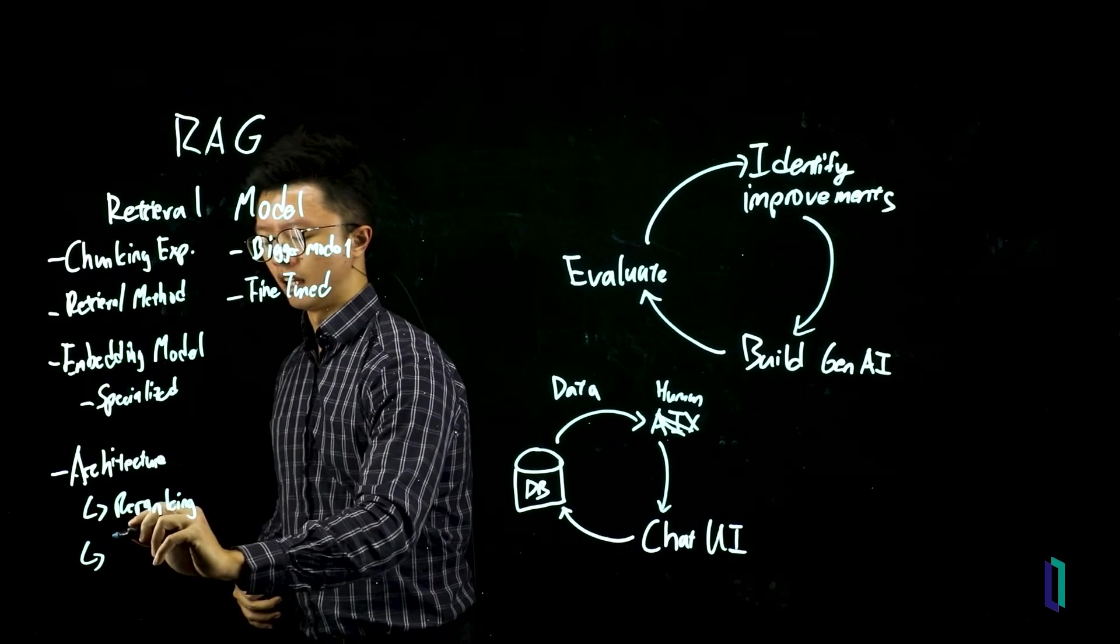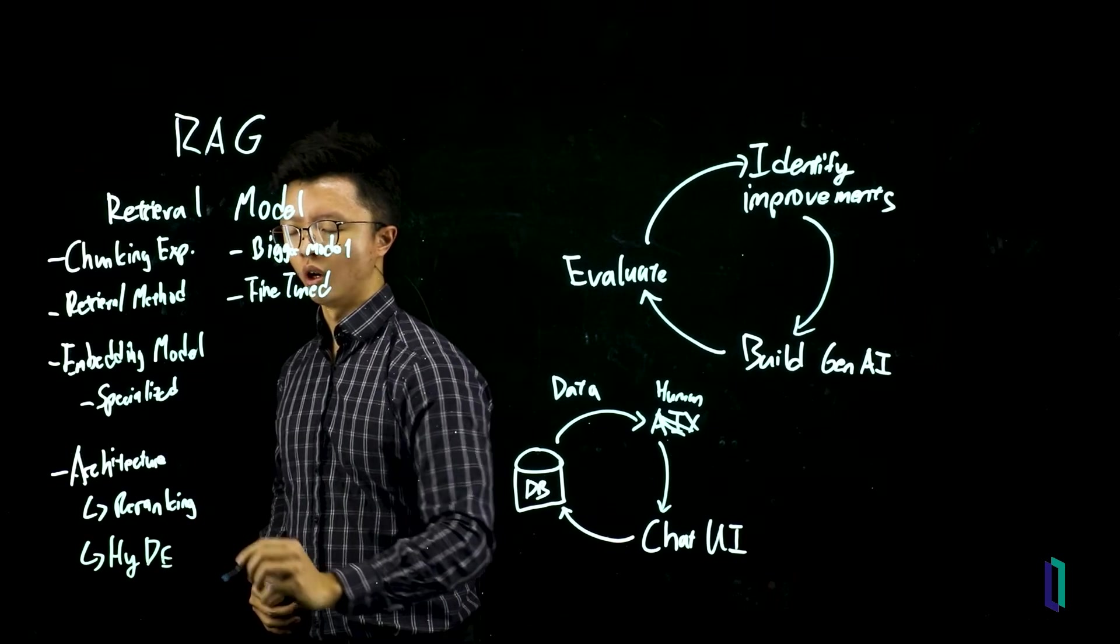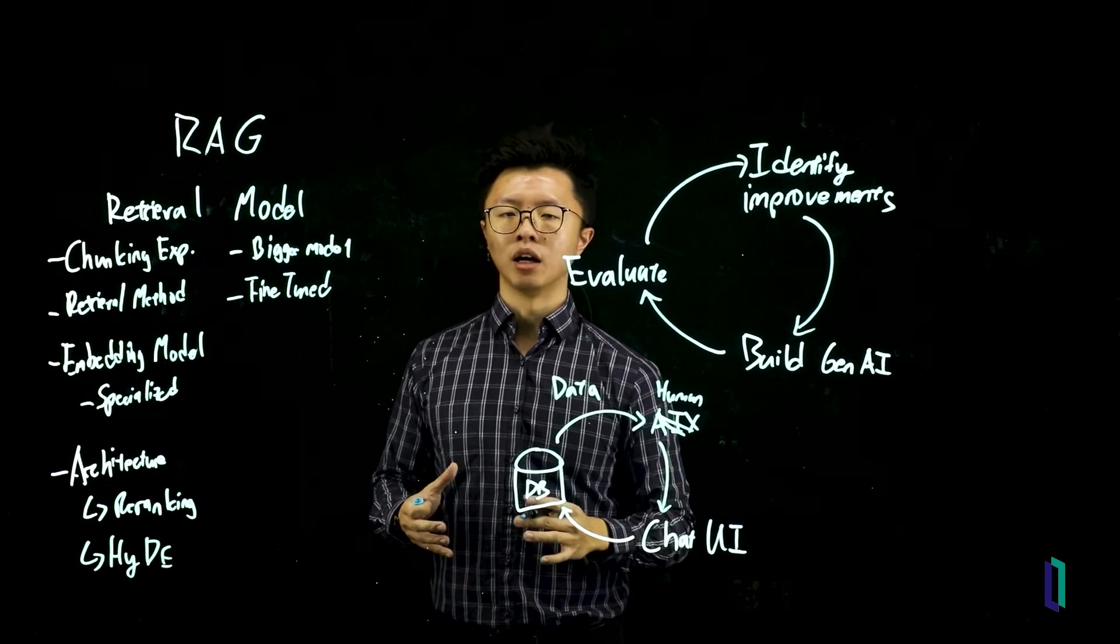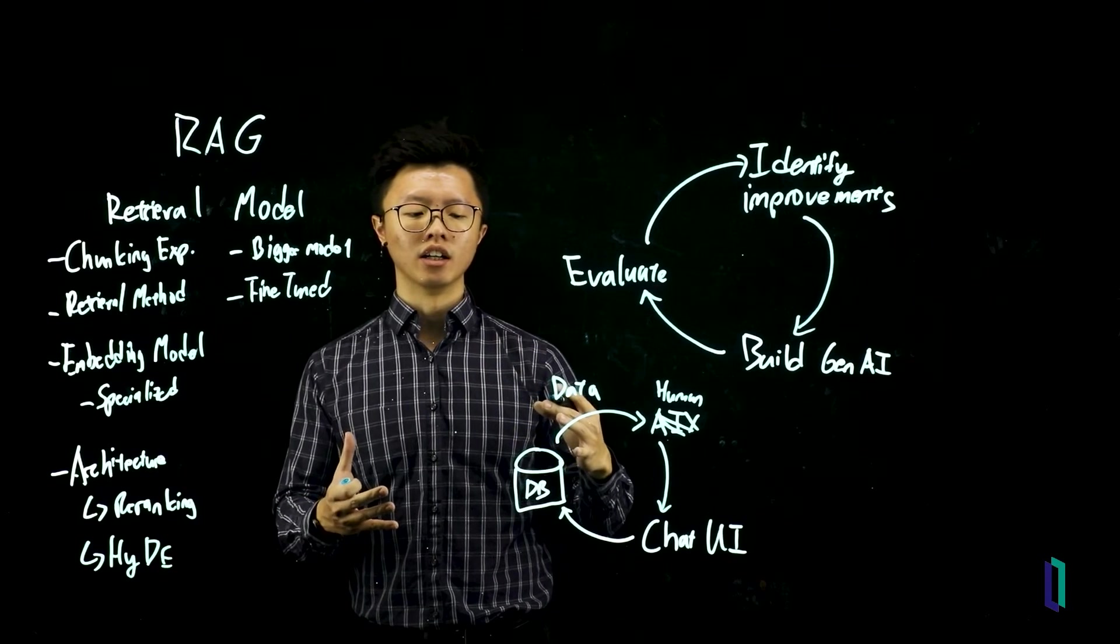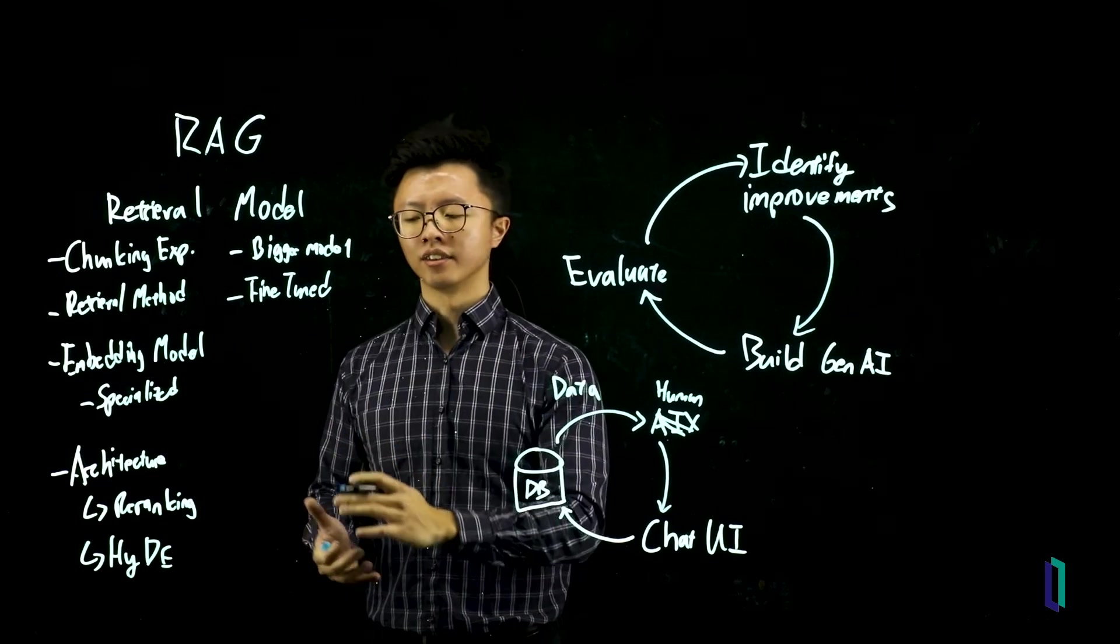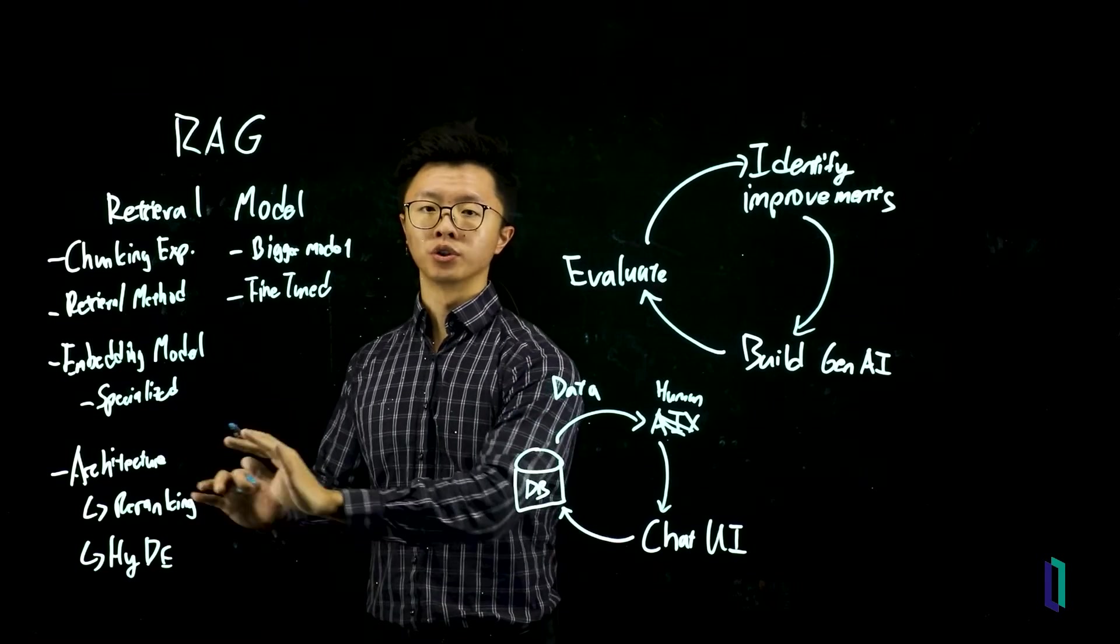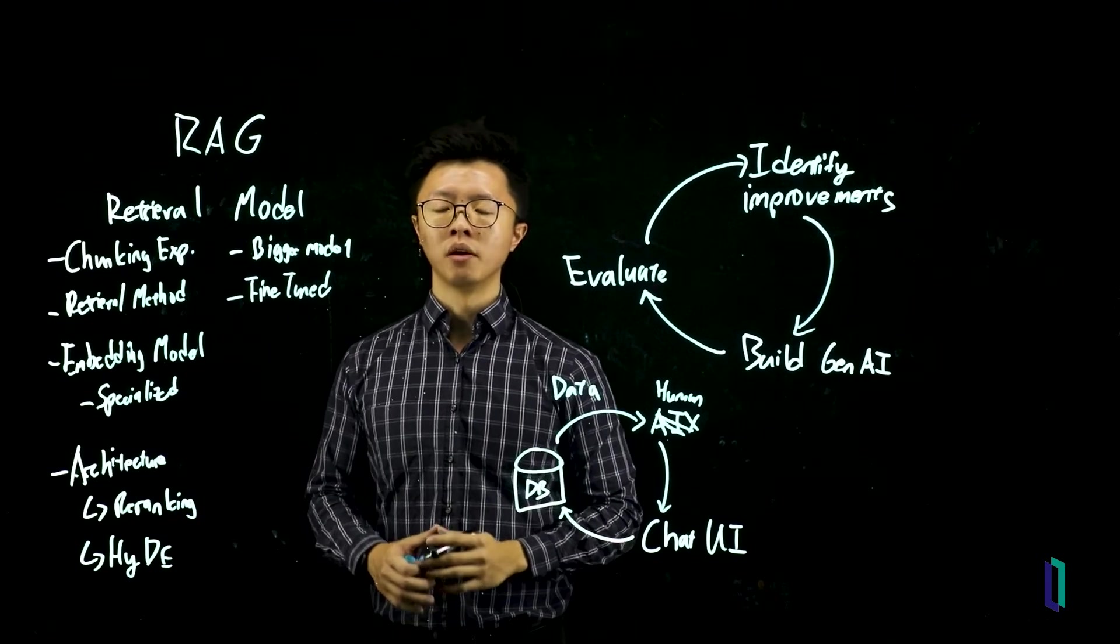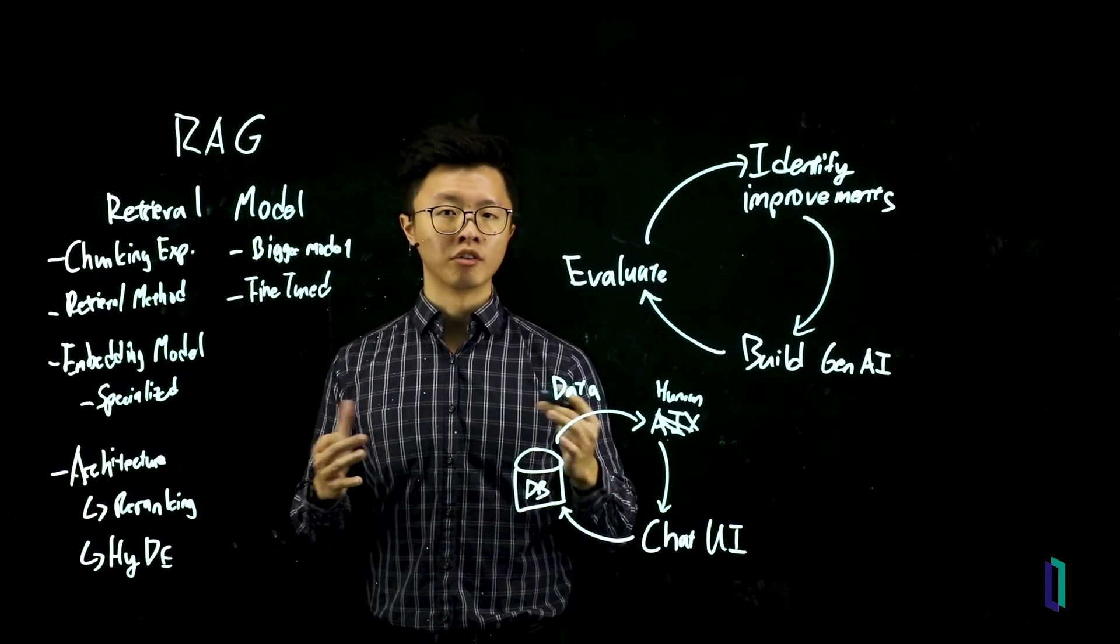You can also include something called hypothetical document embeddings, which is simply a model that helps you to guess what a retrieved document could look like and then use that to search for data instead. And these have been shown to improve performance of RAG systems. And there are also a variety of other ways to do so.